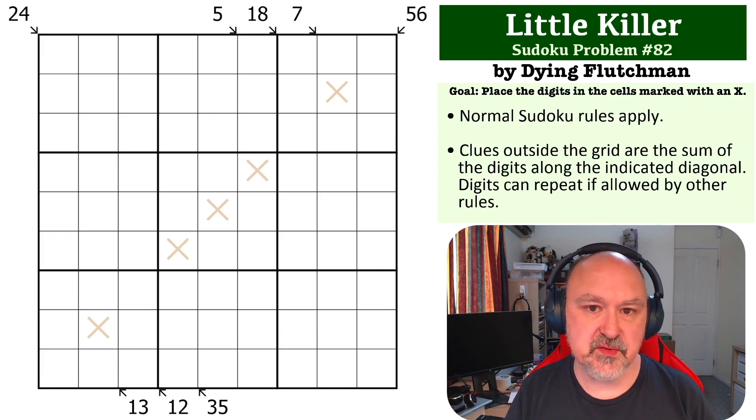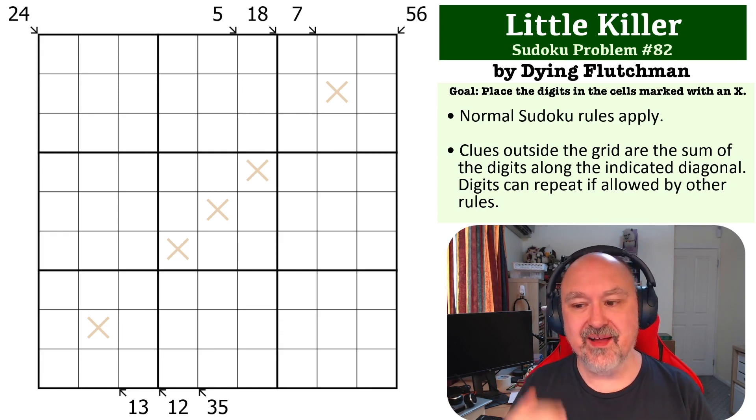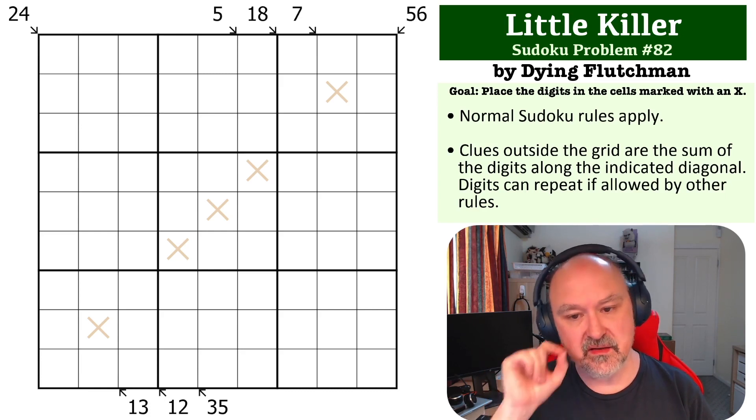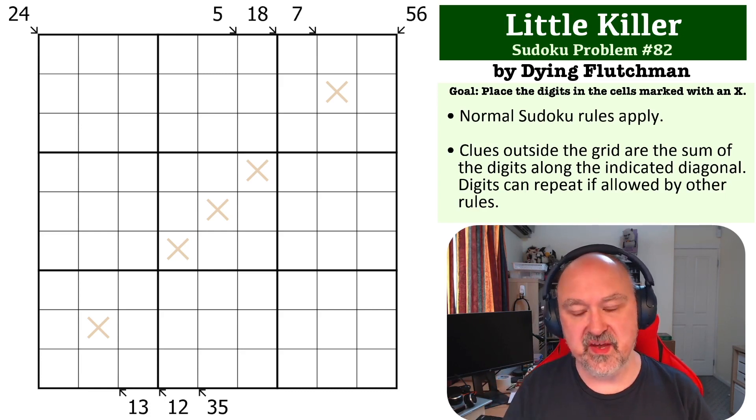The goal on this one is to place all of the digits in cells marked with an X. The way Little Killer works is the clues outside of the grid are the sum of the digits along the indicated diagonal, and digits can repeat along those diagonals if allowed by other Sudoku rules.